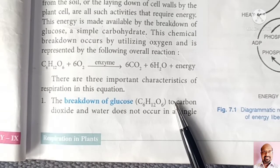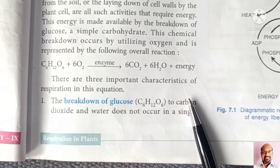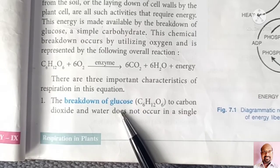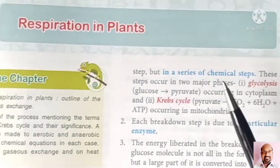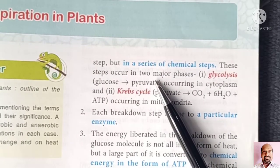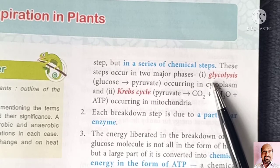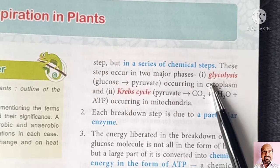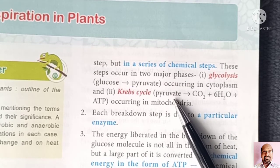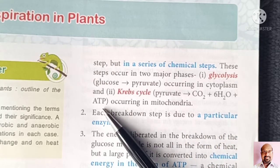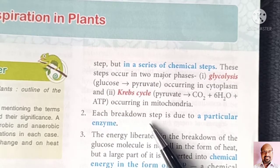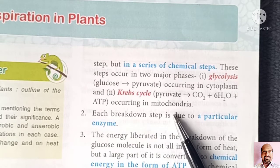The first characteristic is the breakdown of glucose into pyruvate. This glucose is first broken down into pyruvate, and the process is called glycolysis. It occurs inside the cytoplasm. Then, this pyruvate is again converted into carbon dioxide, water, and ATP — adenosine triphosphate — and it occurs in the mitochondria.